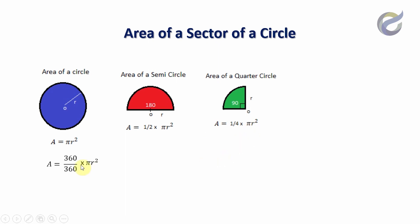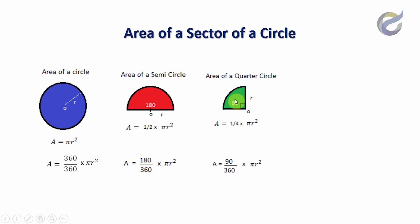This equation can be represented using angles at the center. For a total circle the center angle is 360 degrees, so 360 divided by 360 equals 1, giving area equals pi r squared. For a semicircle, the center angle is 180 out of 360, that is one-half. For a quarter circle, the center angle is 90 degrees, so 90 divided by 360 gives one-fourth of pi r squared.